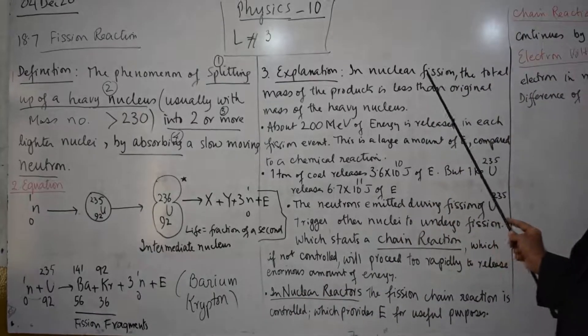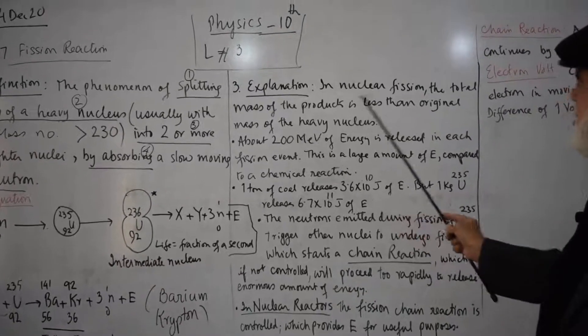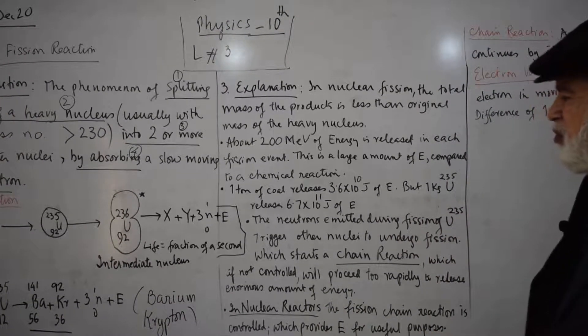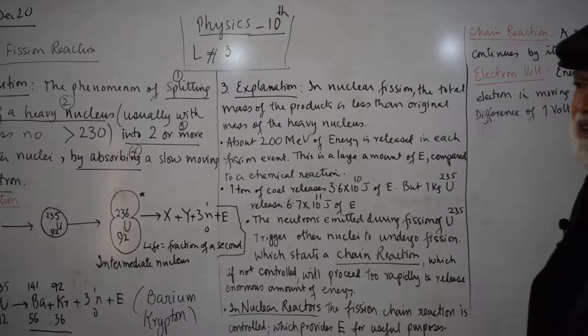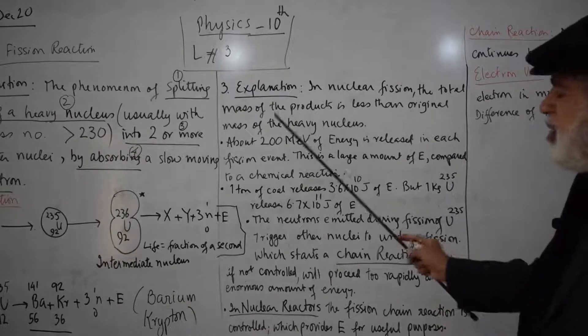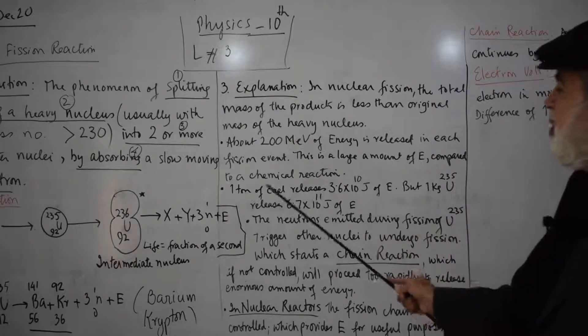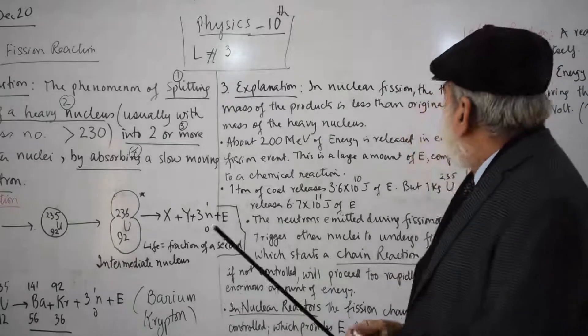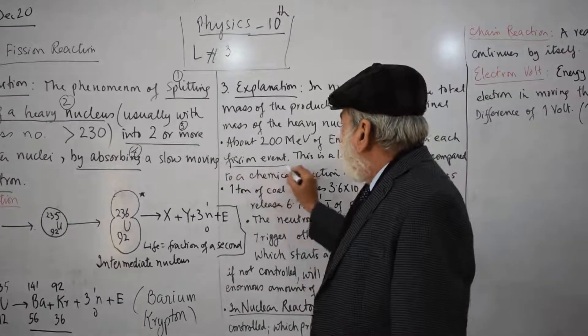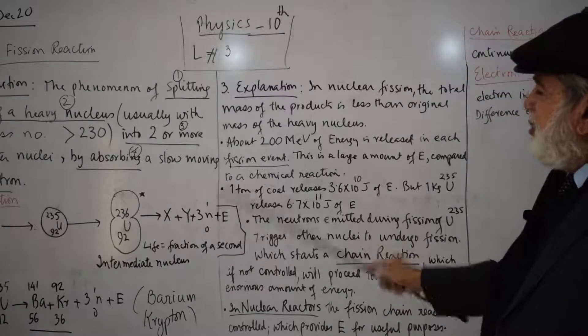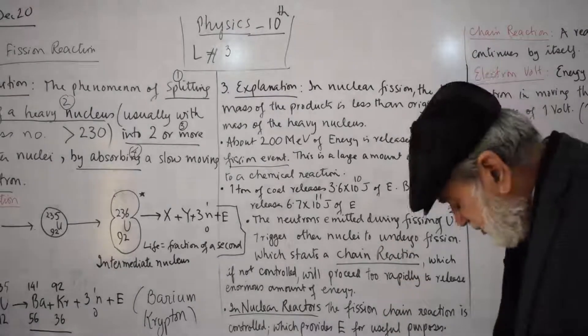In nuclear fission, the total mass of products is less than the original mass. Each fission event means every atom that undergoes fission is known as a fission event.